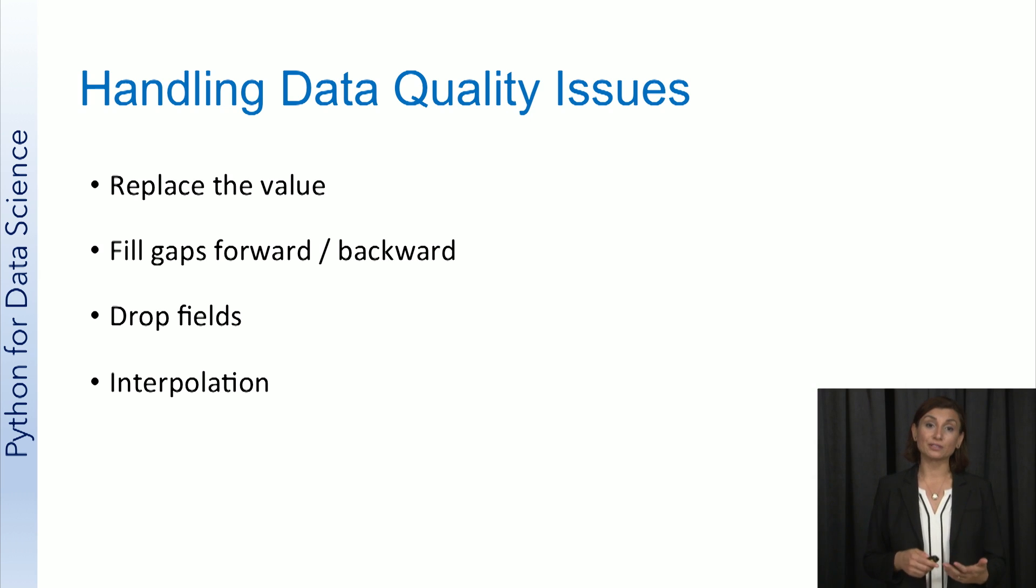Based on how the exploratory and statistical analysis of the data set goes, we can also think of dropping some of the fields and values that are not important to the task. Outliers, for example, might be dropped depending on the situation.